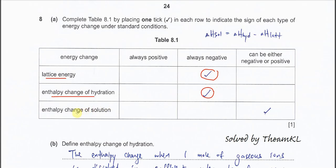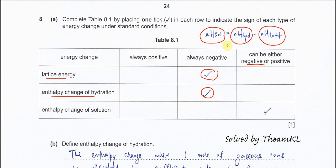For the enthalpy change of solution, this one can be positive or negative. It depends on the hydration enthalpy and the lattice energy. When different compounds dissolve in water, it can be endothermic or exothermic. That's why it can be either negative or positive. It doesn't just depend on the solution itself — it must depend on these two. When these two change, the enthalpy of solution will change.